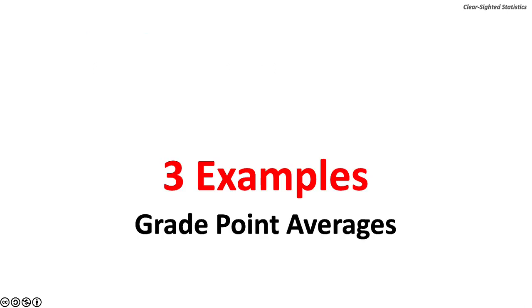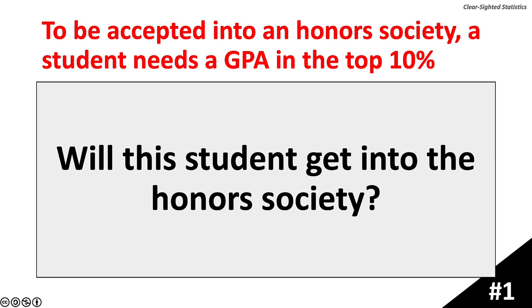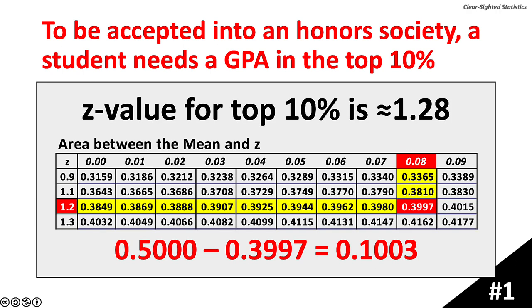Let's work through three examples using students' grade point averages or GPAs. To be accepted into an honors society, a student needs a GPA in the top 10%. A student has a GPA of 3.20. The population mean is 2.78 and the population standard deviation is 0.33. The formula for z is: z equals the random value x minus the population mean mu, over the population standard deviation sigma. The z-value for the top 10% is approximately 1.28, which represents 39.97% of the area above the center line, leaving 10.03% in the right tail. To be admitted to the honors society, a student needs a GPA with a z-value of 1.28 or higher.